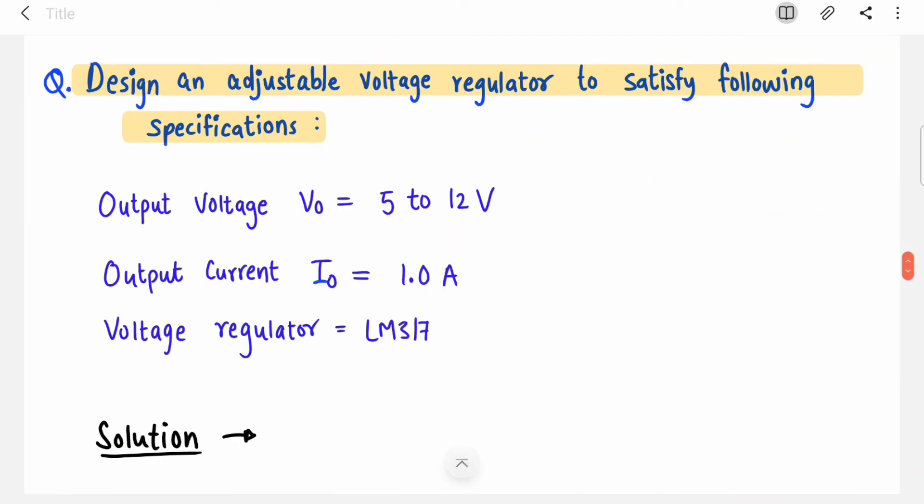Now let's move to a design question. This is a small numerical problem. Design an adjustable voltage regulator to satisfy following specifications: output voltage 5 to 12 volts. Design such a circuit with this IC that will provide you adjustable output voltage.